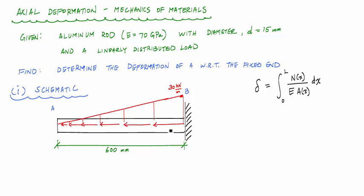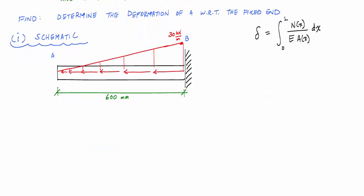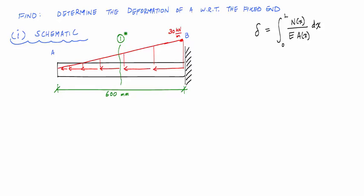The first thing we're going to need to do is really a statics problem—determine the internal load along the length of this rod AB. For this problem, I have two discontinuities, a discontinuity at A and at B, so that means I just need to make one cut to evaluate the internal loading.